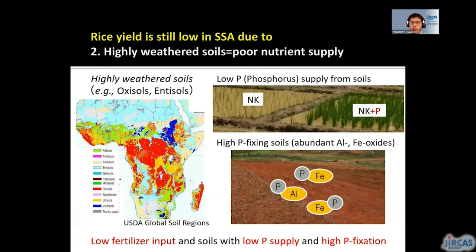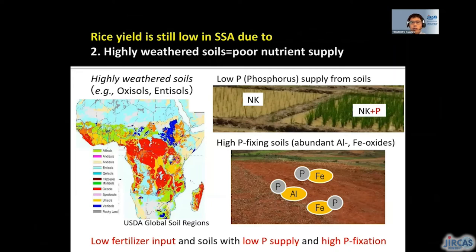Another limitation we have to consider is very old and poor nutrient soils that are widely found in Africa. Phosphorus deficiency is one of the major issues because soils have low phosphorus supply capacity. In Africa, rice responds to fertilizer input only when phosphorus is applied. In addition, soils in Africa often have high phosphorus fixing capacity — that means phosphorus is strongly bound or fixed to aluminum and iron oxide in soils and becomes less available to crops, even when farmers apply phosphorus fertilizer. Therefore, to improve crop productivity in Africa, we have to deal with low fertilizer inputs and soils with low phosphorus supply and high phosphorus fixation.